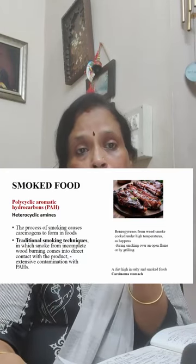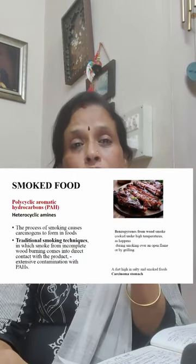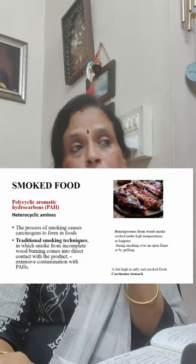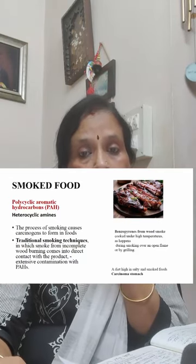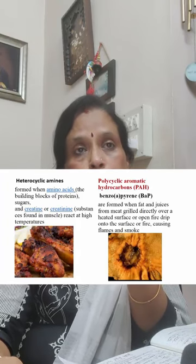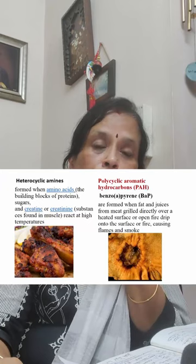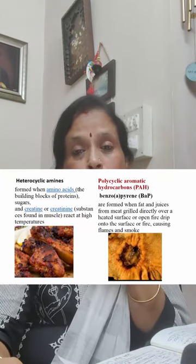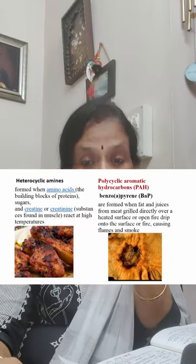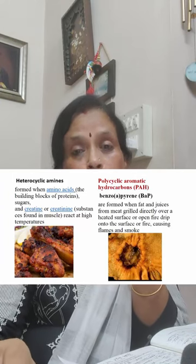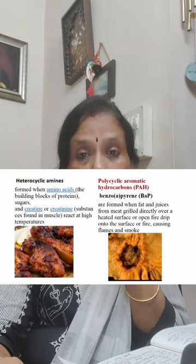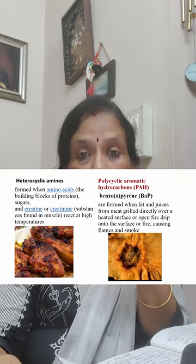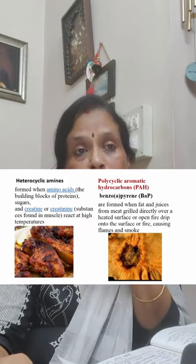A diet high in salty and smoked food produces carcinoma of the stomach — this is one thing we should remember about gastric carcinoma. Polycyclic aromatic hydrocarbons are formed when fat and juices from meat drip onto a heated surface or open fire, causing flames and smoke. Nobody now uses traditional smoking with firewood; everybody has gas cylinders. Only perhaps in a jungle setting would someone cook meat this way.